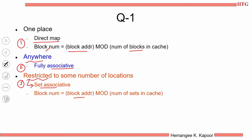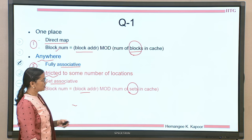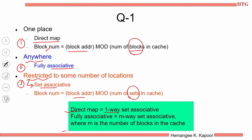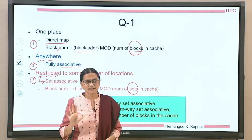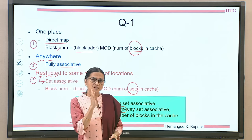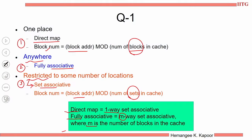The number of sets equals the number of groups. For example, with 20 students in 5 groups, each group has 4 students and you modulo by 5. A direct map cache can be called a one-way set associative cache. A fully associative cache can be called an M-way set associative cache, where M is the total number of blocks in the cache — so you can sit in any of those M blocks.